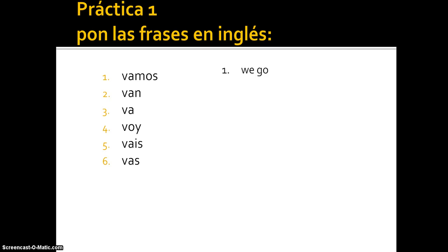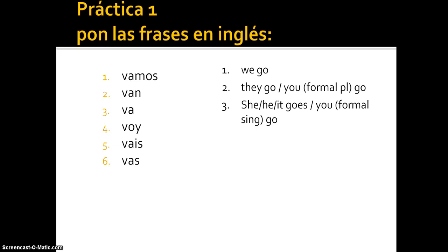Number one: vamos means we go. Number two: van means they go, or you formal plural go. Remember these can also mean are going — so we are going, they are going. Number three: va means she, he, it goes, or you formal go, singular. Number four: voy means I go or I'm going. Number five: vais means you go, plural, or are going. Number six: vas means you go, singular, or are going. These last two are the informal forms.